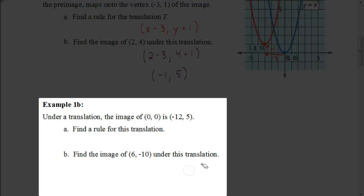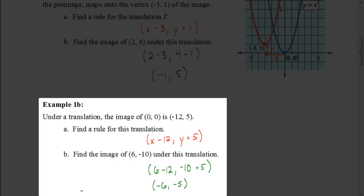Why don't you try that on your own for this next one. Figure out what the rule would be for this translation, and then find the image of (6, -10) under that translation. Pause the video and hit play when you're ready to check. The rule for the translation here: we can see that (0, 0) has moved to (-12, 5), so it's moved to the left 12 units and up 5 units — that's x minus 12 and y plus 5. Now for (6, -10): 6 minus 12 is negative 6, and negative 10 plus 5 is negative 5. So that new coordinate would be (-6, -5).